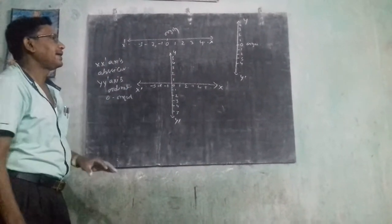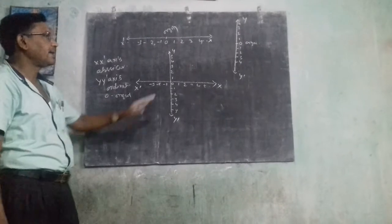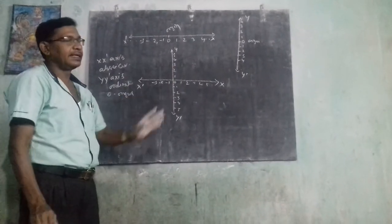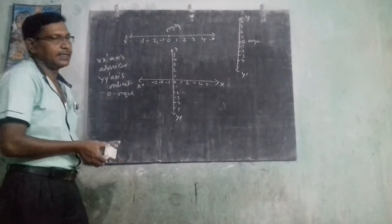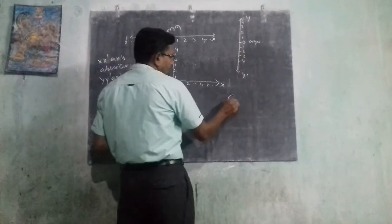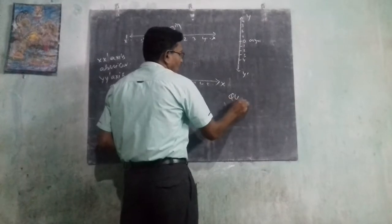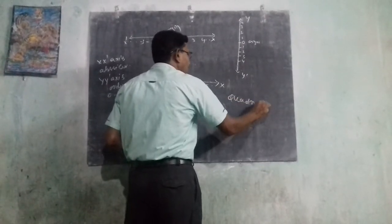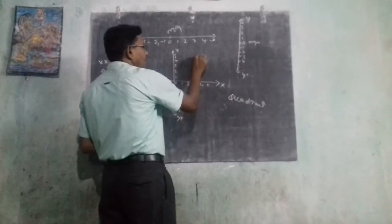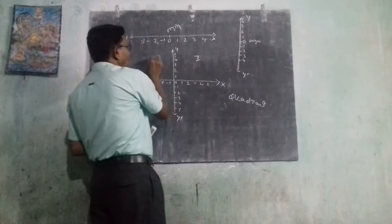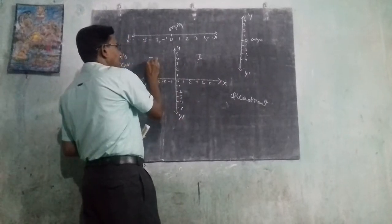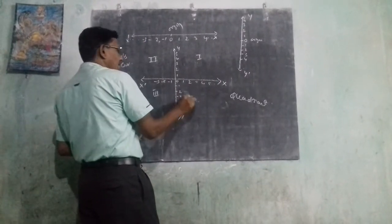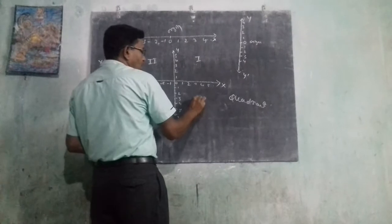These two lines divide the plane into four parts. Each part is known as a quadrant. So here we have quadrant first, quadrant second, quadrant third, and quadrant fourth.